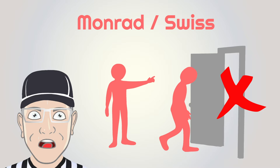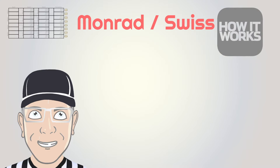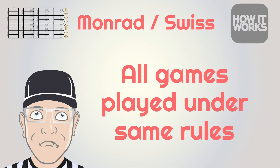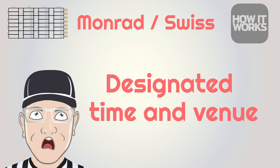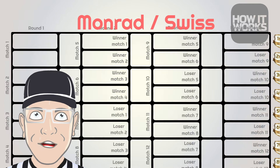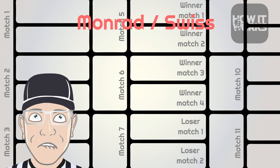So how does a Monrad work? The perfect Monrad or Swiss system will have 4, 8, 16, 32, or 64 players. In the first round, all games are played under the same rules — for example, best of five with rally points in squash — at the designated time and venue. All results must be given to the event organizer once a match is completed, who will transfer them onto the draw sheet. Winners and losers of the first round all move into the second round into predetermined positions.